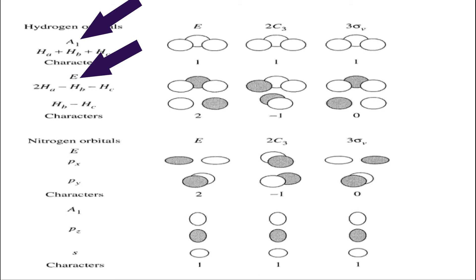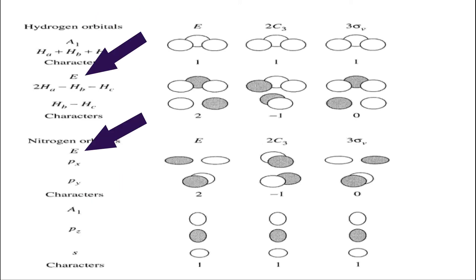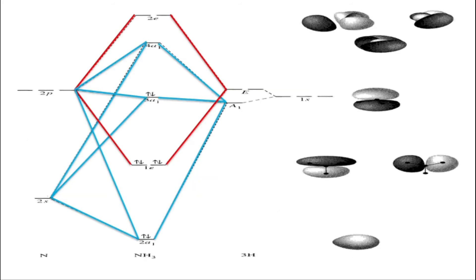So it's a game of matching symmetries: A1 orbitals from nitrogen interact with the A1 group orbital from hydrogen, and E orbitals from nitrogen interact with E group orbitals from hydrogen. In the MO diagram, the hydrogen group orbitals were originally degenerate, but splitting them into A1 and E: A1 is lower in energy and E is higher. The decrease in energy of A1 is greater than the increase of E because E is doubly degenerate.